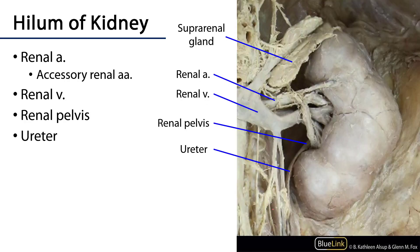The hilum of the kidney is an area where neurovasculature enters and exits. It includes several major elements: the renal artery, which divides into various segmental arteries within the hilum; accessory renal arteries that may also serve the hilum; the renal vein; and the renal pelvis, which is contiguous with the ureter within the hilum. Moving more laterally, the hilum is contiguous with a space called the renal sinus, which is surrounded by the parenchyma of the kidney.